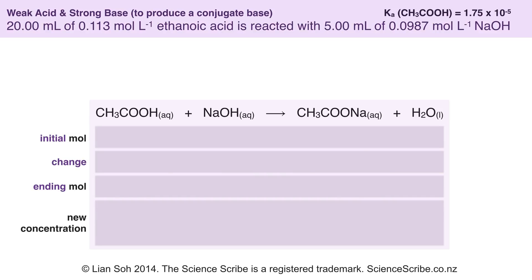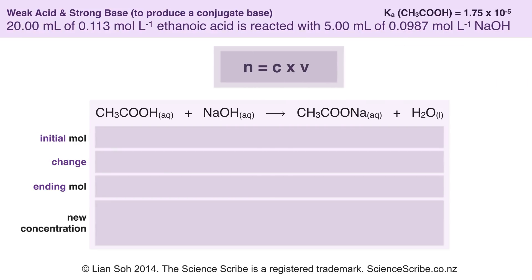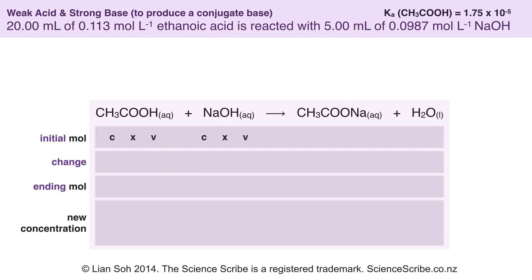To find the pH of this type of solution, I'm going to use an ICE table — ICE stands for Initial, Change, and Ending. To calculate the initial moles, I use the formula N = C × V, substituting C × V for both ethanoic acid and sodium hydroxide.